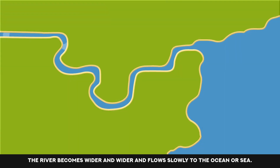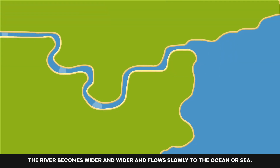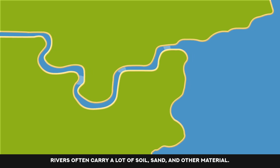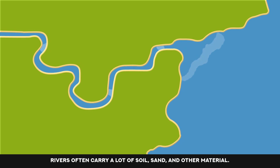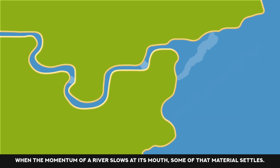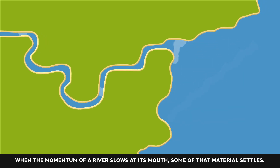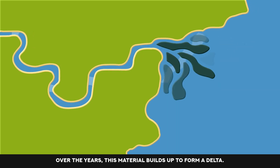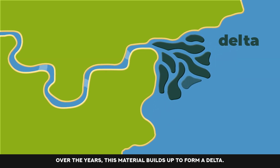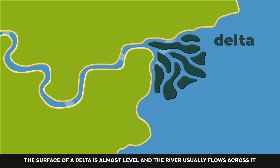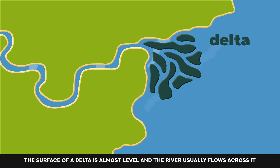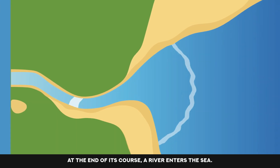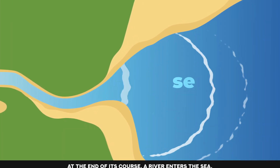The river becomes wider and wider and flows slowly to the ocean or sea. Rivers often carry a lot of soil, sand and other material. When the momentum of a river slows at its mouth, some of that material settles. Over the years, this material builds up to form a delta. The surface of a delta is almost level and the river usually flows across it in several small branches. At the end of its course, a river enters the sea.